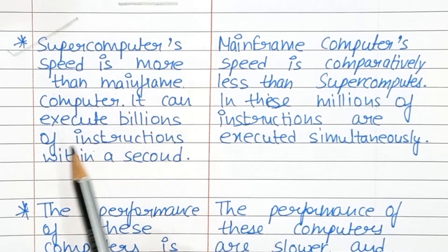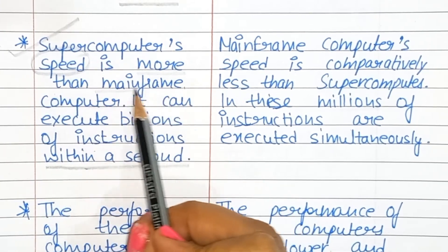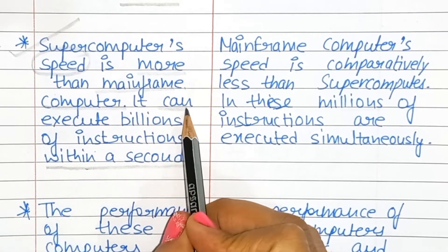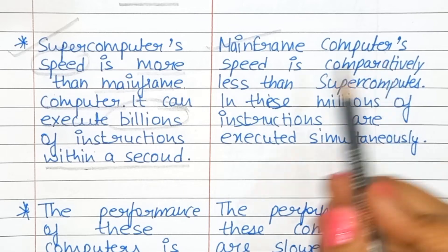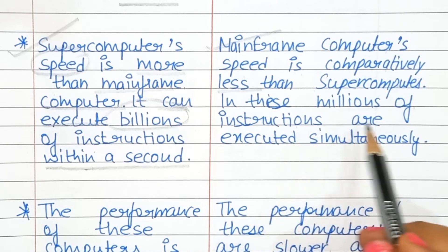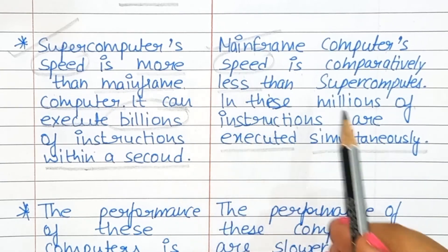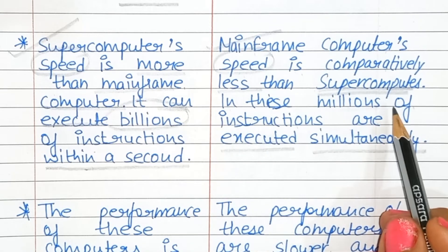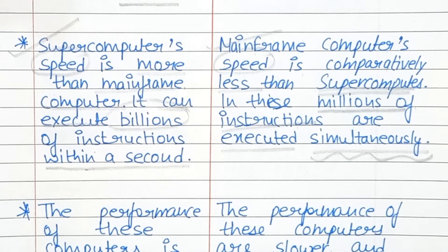The next difference is speed. Supercomputers' speed is more than mainframe computers and can execute billions of instructions within a second, while mainframe computers' speed is comparatively less and millions of instructions are executed simultaneously.